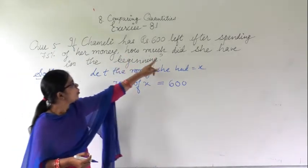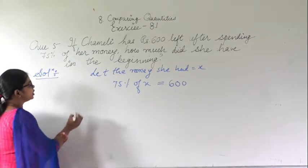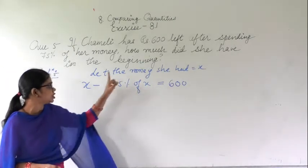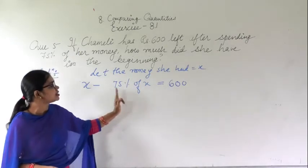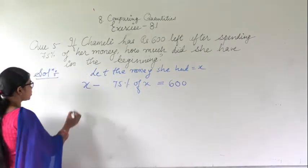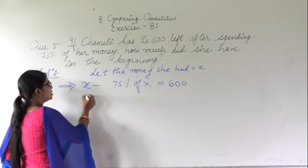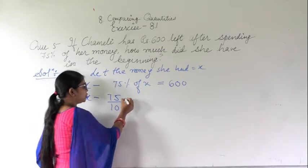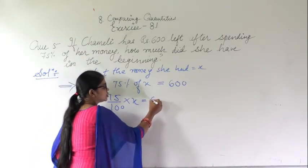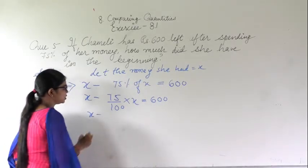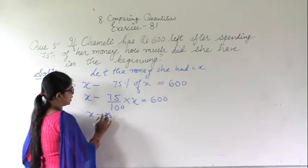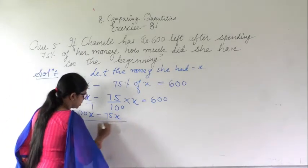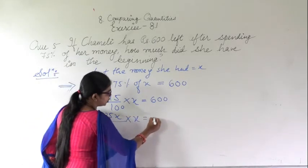Now we have to find out how much she had in the beginning. We will subtract: from the total money she had, she spent 75% of the total money, and after that she was left with 600 rupees. So the equation is: x minus 75/100 into x equal to 600.